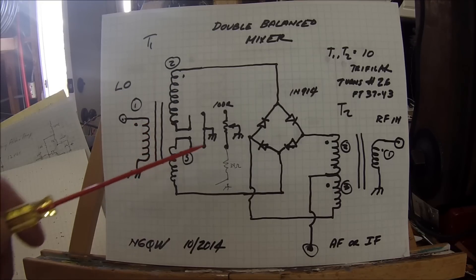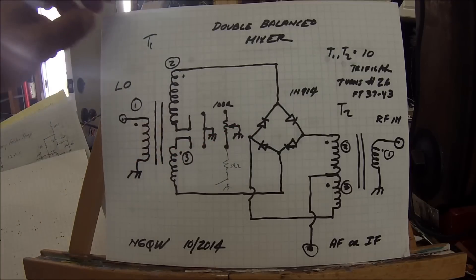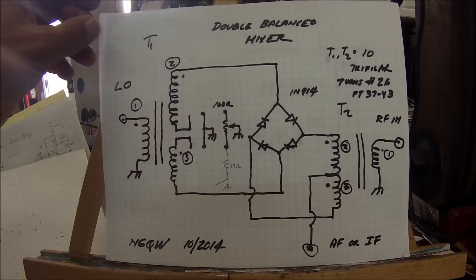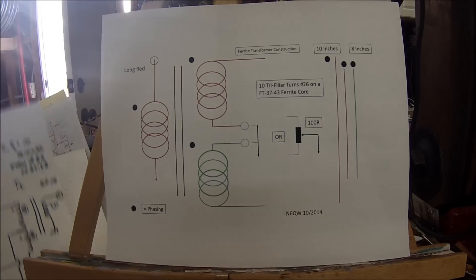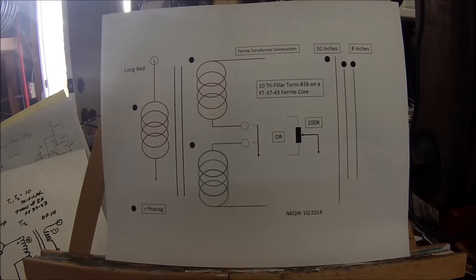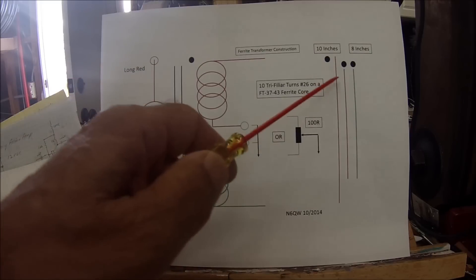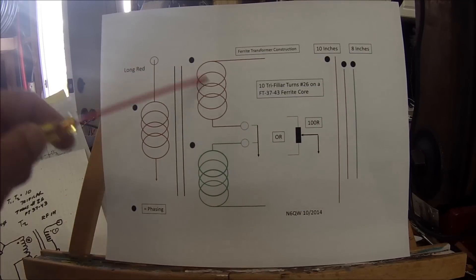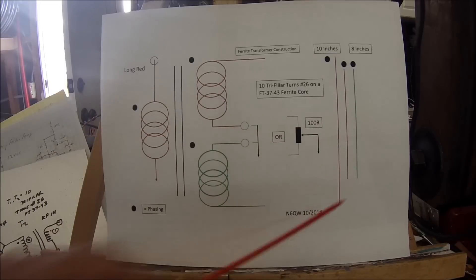A critical element is the construction of the tri-filar wound transformers and selection of proper diodes. I prepared another diagram which shows more detail of the tri-filar wound transformer specifics. We have a ferrite core with three windings. This winding is the long red winding - about 10 inches long versus these two windings which are 8 inches long.